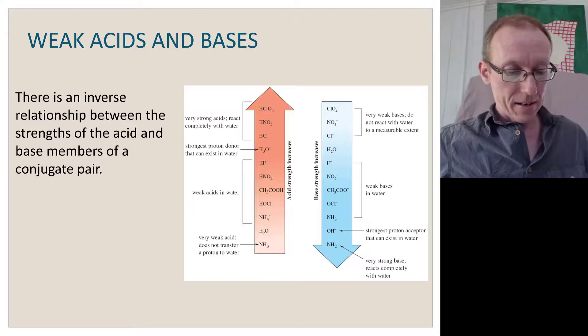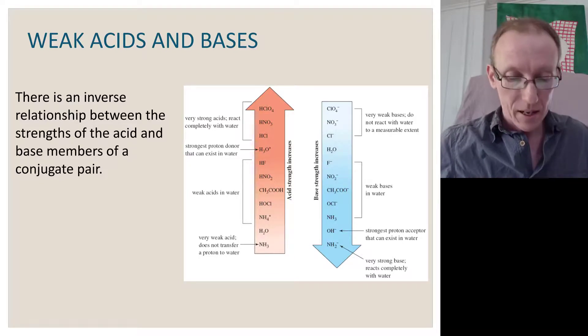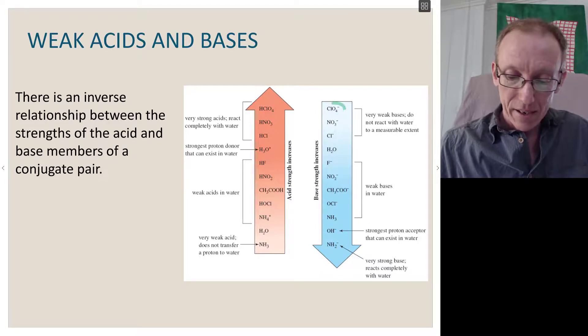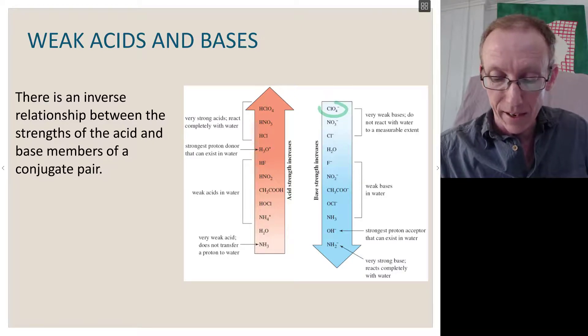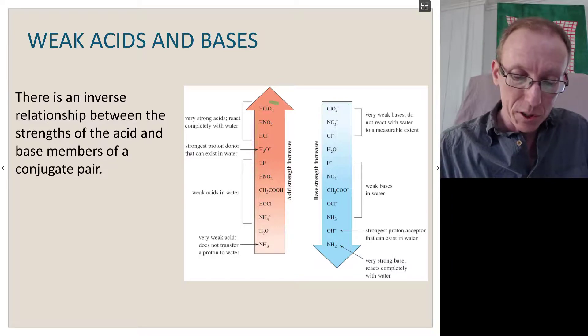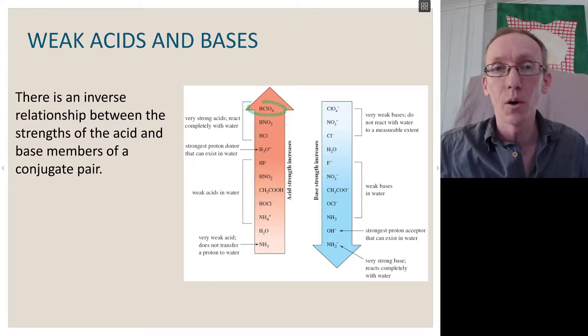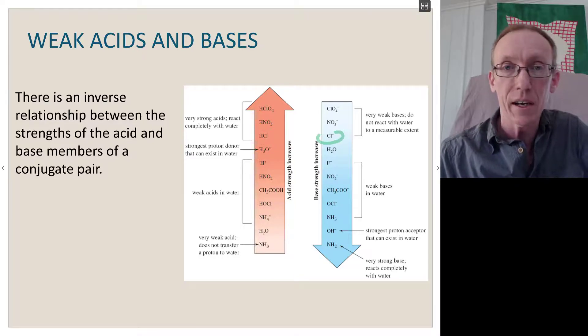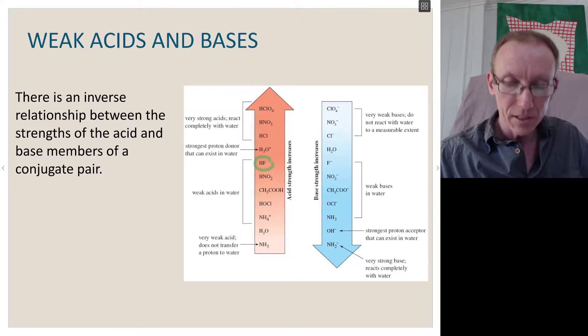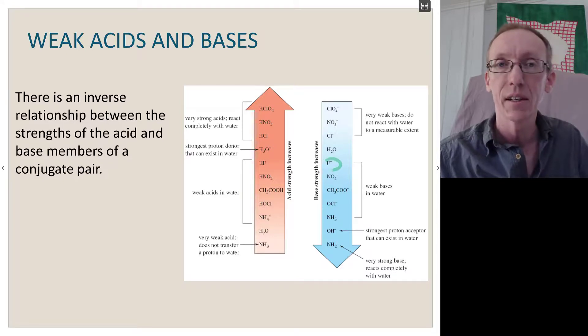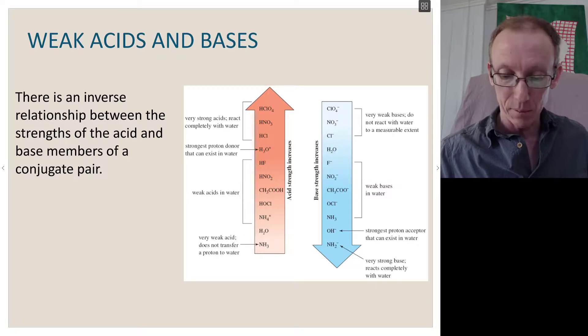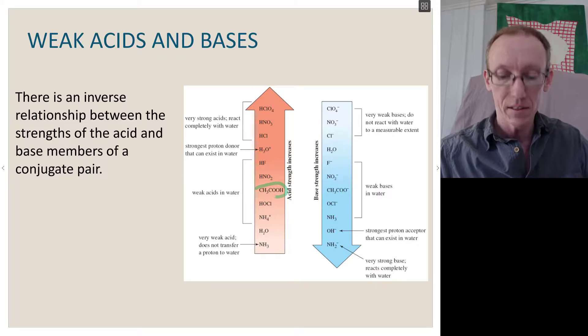There's an inverse relationship between the strength of the acid and the base members of a conjugate pair. Here's some examples of real-world acids. This is perchloric acid and here is perchlorate anion. Perchlorate anion is a very stable anion, so it's a very weak base. Therefore its conjugate acid, perchloric acid, is a very strong acid and will have a low pKa. Nitric acid is quite strong because nitrate anion is a very stable anion. Hydrochloric acid is also a strong acid because chloride is a very stable anion. However, as we go down, hydrofluoric acid is not nearly as strong as hydrochloric because fluoride anion is not as stable as chloride anion. If we look at acetic acid, acetate anion is not nearly as stable as chloride, so acetic acid is not nearly as strong as hydrochloric acid.